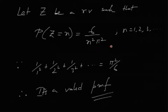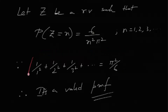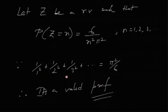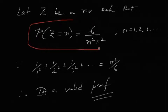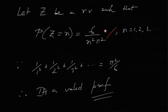Now you might think, is it a valid PMF? Well, yes, it is a valid PMF because of this identity: 1/1² + 1/2² + 1/3² + ... equals pi squared by 6. So basically, if you keep on adding these PMF values for every value of n, you'll eventually get one. And obviously this is positive for all values of n, so this is a valid PMF.